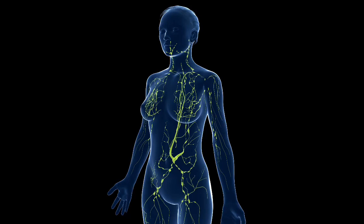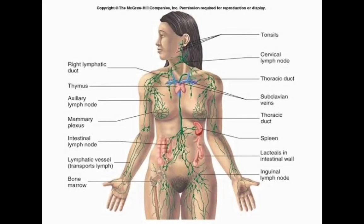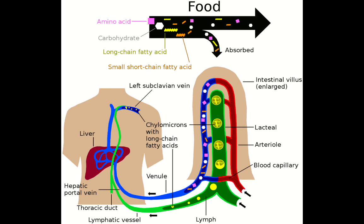The lymphatic system is a network of vessels through which lymph drains from the tissues into the bloodstream. It is a part of the circulatory system as well as the immune system. It is made up of lymphatic vessels, lymph nodes, and lymphoid tissues. The lymph vessels carry a clear fluid called lymph, which bathes the tissues, collects waste products, bacteria, and damaged cells, and drains into the lymphatic capillaries and vessels. These vessels carry the lymph throughout the body, passing through numerous lymph nodes which filter out unwanted materials such as bacteria and damaged cells.